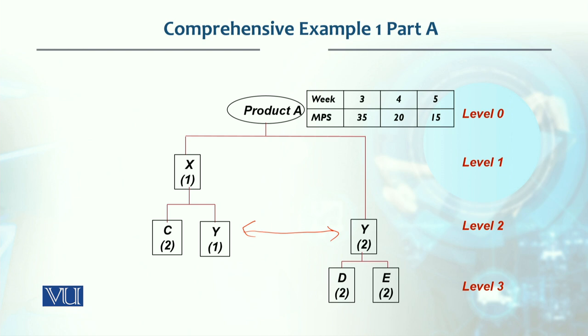These will be combined to create Y's record, then C's record will be made from X, and lastly D and E's turn will come because that is level 3.